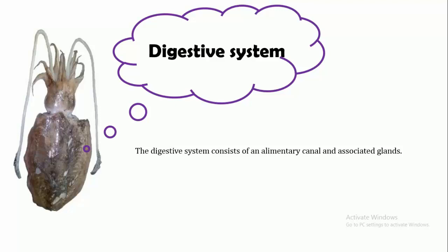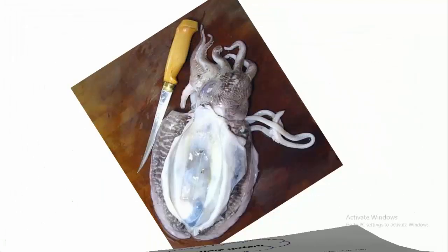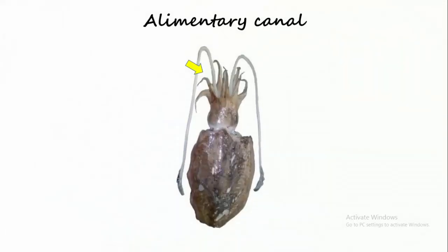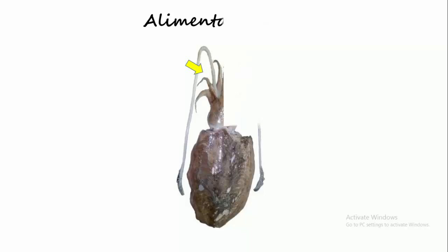If you cut open Sepia on the mid dorsal portion, you will be able to see the internal organs. Talking about the alimentary canal, Sepia has the mouth located on its anterior section. The mouth is surrounded by five pairs of arms, out of which four are short arms which help the animal to capture the prey and bring it to the mouth.